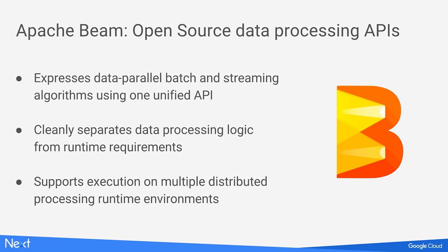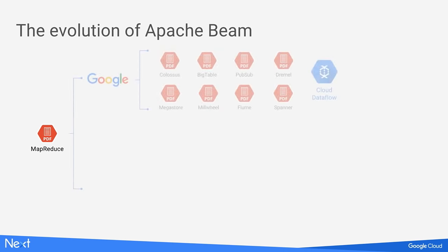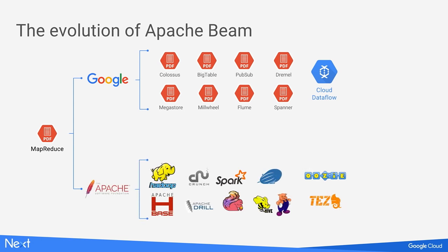To put Beam in context in the surrounding big data ecosystem, let's look at the evolution. The original MapReduce paper in 2004 fundamentally changed distributed data processing. Inside Google, we continued to innovate but not share code broadly. In 2014, we created Google Cloud Dataflow — a programming model, SDK, and fully managed service. Meanwhile, the open source ecosystem created Hadoop. Beam is essentially bringing these two streams of work back together, based on the Dataflow programming model but generalized and integrated with the broader big data ecosystem.